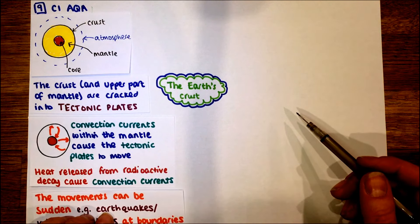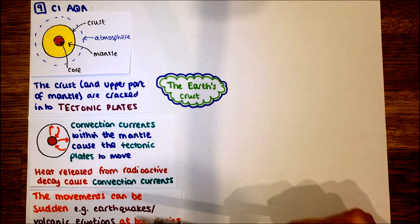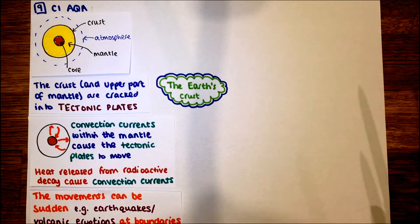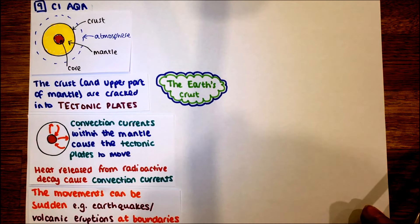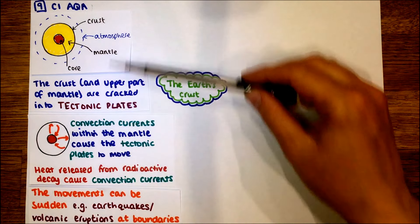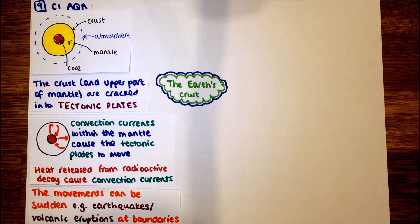Movements which are sudden in those tectonic plates can be earthquakes or volcanic eruptions at the boundaries of the plate. That's important to note as well that they tend to be on those boundaries. So that's in terms of the surface of the earth and the structure.